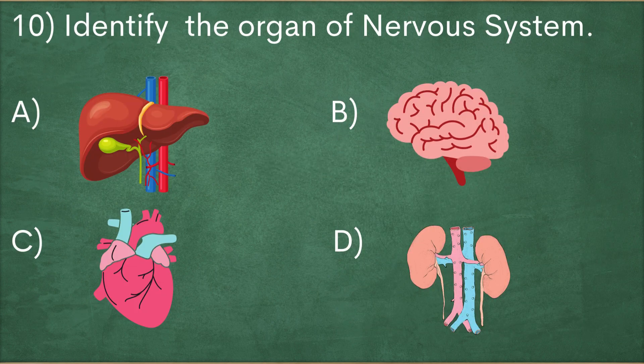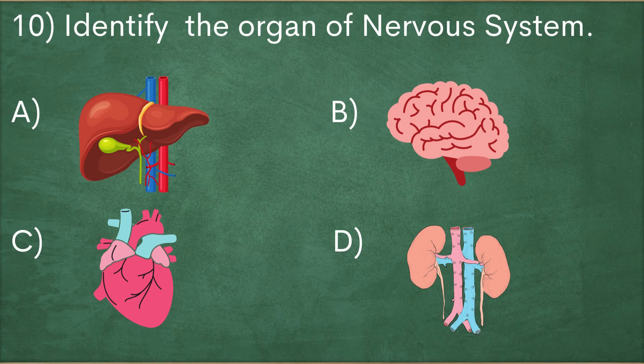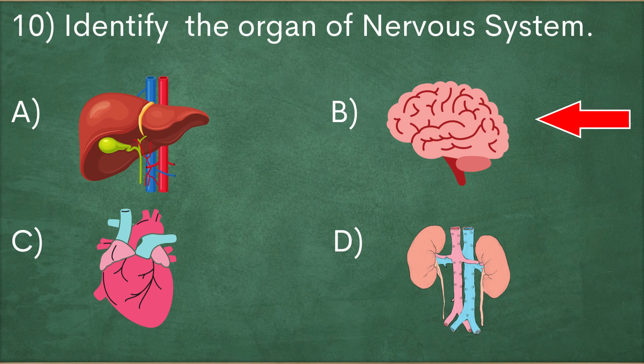Identify the organ of the nervous system. Answer is brain.